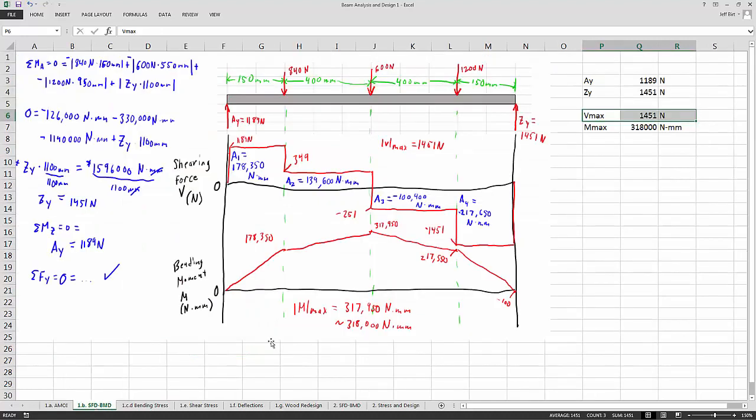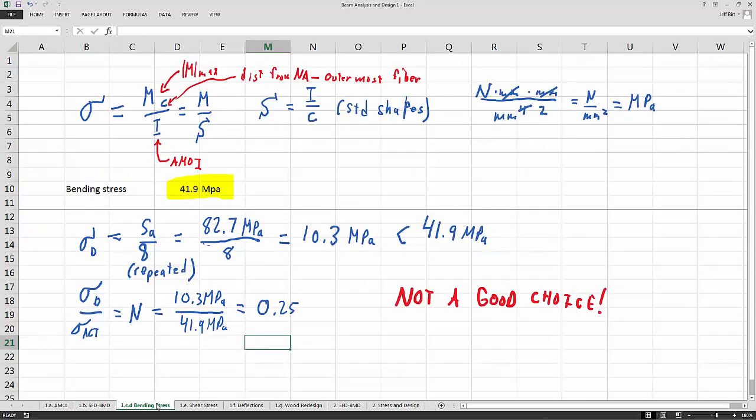We developed the shear force diagram and the bending moment diagram for this loaded setup, then calculated the bending stress based on both the I and the bending moment. We found out that this is not a good material. The nylon 6-6 material was not a good choice because the design stress was much less than the stress that we actually wanted to put on it.